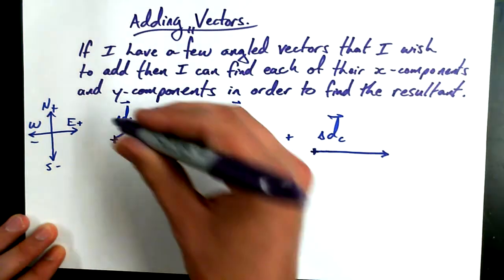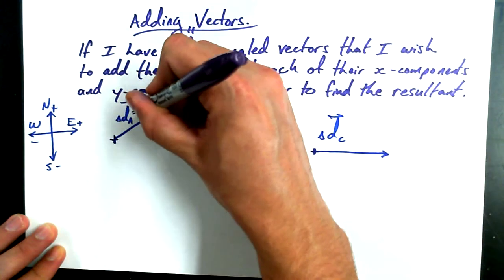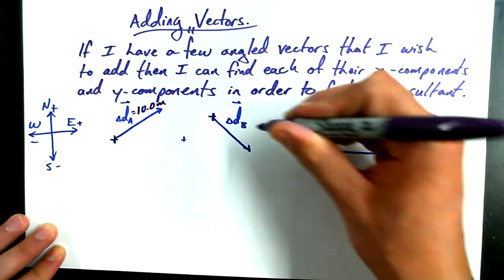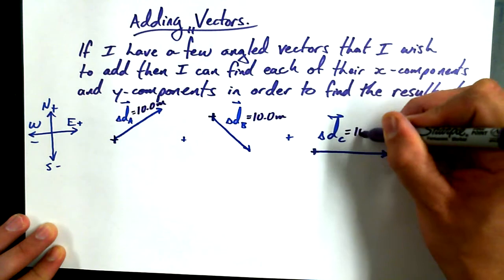The magnitudes for these vectors, I'm going to make, just to make it nice and simple, I'm going to make each of them have the same magnitude, 10.0 meters, 10.0 meters, and 10.0 meters.